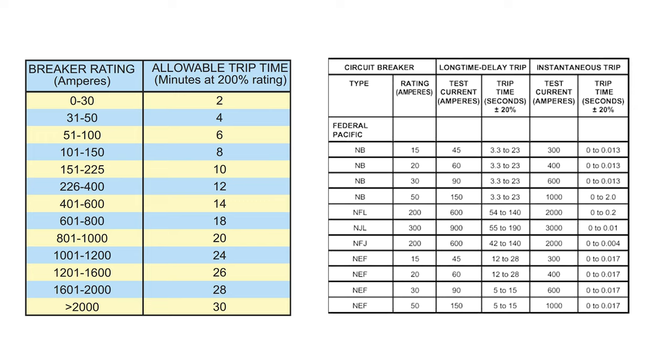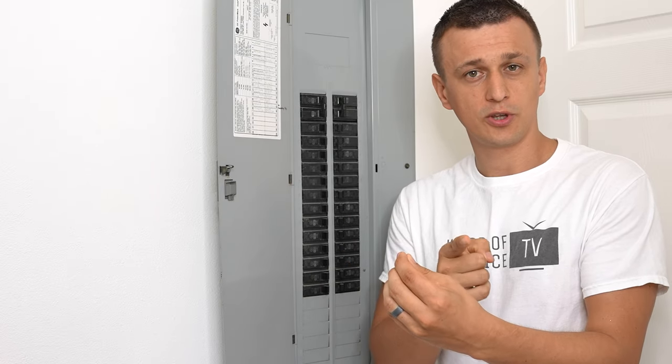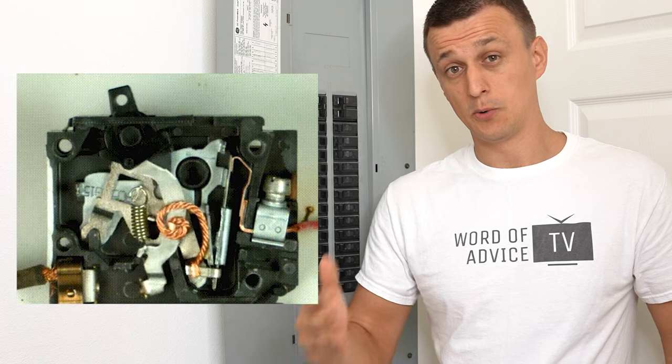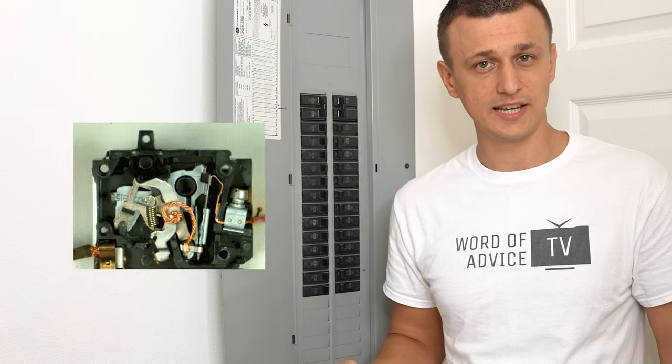In fact, here's a quick fact for you. Let's say we have a 20 amp breaker and there's 22 amps going through it. It might take it hours to trip. But of course, if there were 60 amps going through it, then it would trip in just a few seconds.